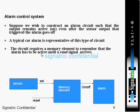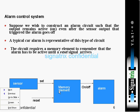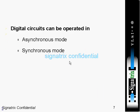The circuit requires a memory element to remember that the alarm has to be active until the reset signal arrives. Unless you apply a reset, the memory element will remember that state. If you want to make your circuit move to the next state, you have to reset your circuit.